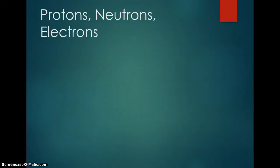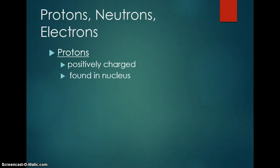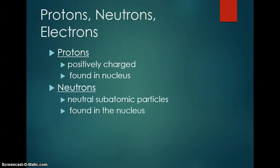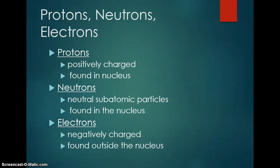And then if we look at protons, neutrons, and electrons in summary, protons are positively charged and they're found in the nucleus. Neutrons are neutral subatomic particles, and they're also found in the nucleus. Electrons are negatively charged and they're found outside the nucleus. Protons and neutrons, additionally, are also considered to be much more heavy. They contribute to the mass of the atom, and electrons' mass is considered to be negligible in terms of the atom.